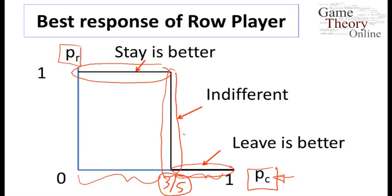The nice thing about this graph is that it's actually connected — it moves along nicely as a function of pc. So the best response correspondence of the row player has this particular shape in this game.